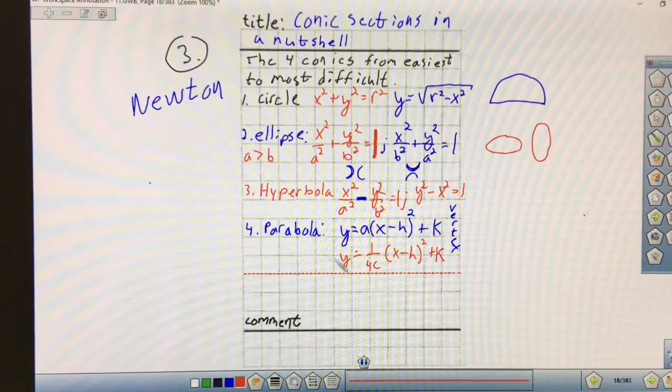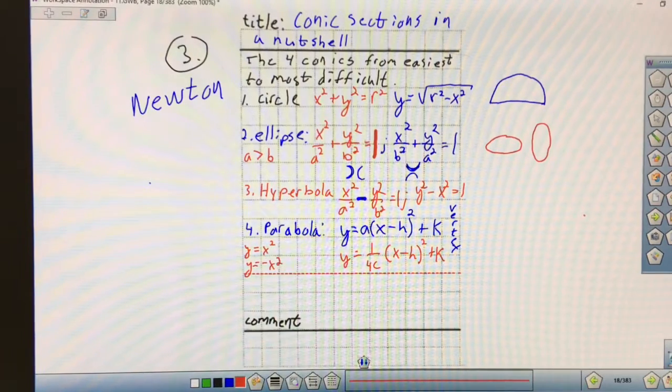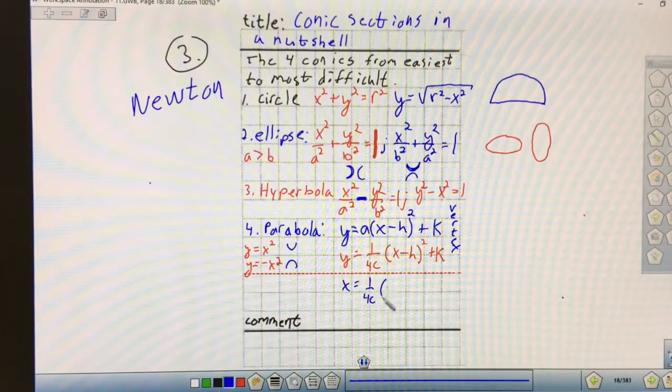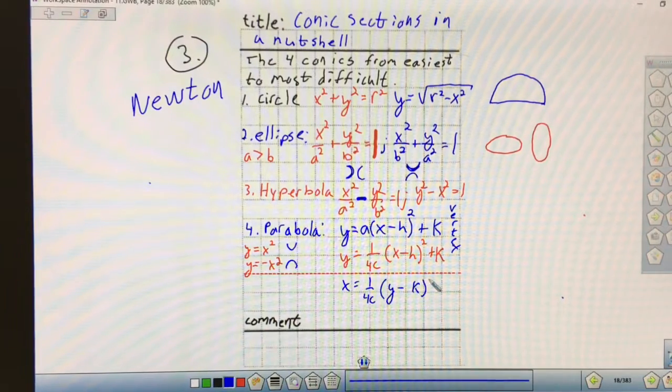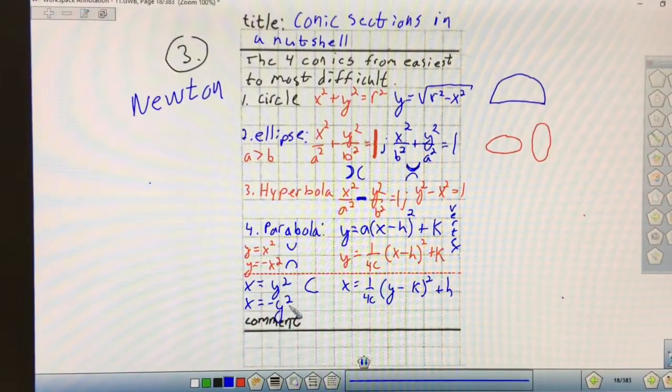Now, depending on whether the leading coefficient is positive or negative, they're both Y equals X squared type graphs, or Y equals negative X squared. So it's either going to be concave up or concave down. X equals one over four C times (Y minus K) squared plus H. This is X equals Y squared format, and that's going to be concave to the right, or opening to the right. X equals negative Y squared is going to be opening to the left.